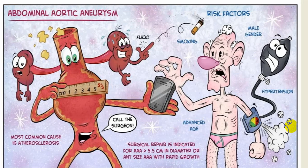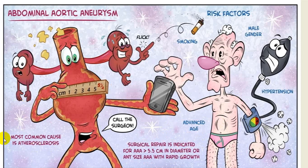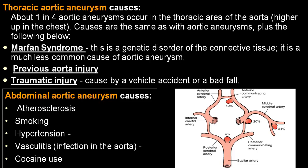Abdominal aortic aneurysms are much more common, and the most common causes are smoking, male gender, severe uncontrolled hypertension, advanced age, and prior surgical repair of the aorta with post-operative aneurysm development. The most common underlying cause is atherosclerosis. In thoracic aortic aneurysm, the most common cause is Marfan syndrome, along with previous aortic injury, blunt trauma, or penetrating injury. In abdominal aorta, atherosclerosis, smoking, hypertension, vasculitis, cocaine, and genetic factors are implicated.